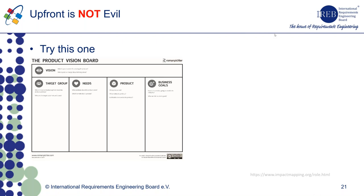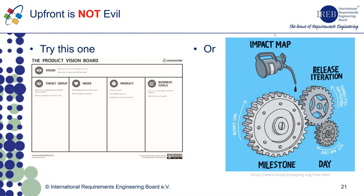There are many useful techniques to get to this upfront initial product backlog. For instance, the product vision board from Roman Pichler says you need to start with a vision, define your target group, define their needs broadly, develop an initial product idea, and define the goals you want to achieve. Another useful one is impact mapping by Gojko Adzic, which starts from the goal the system should have and the actors needed to reach that goal. Impact mapping tells us to focus on business outcome rather than just output.